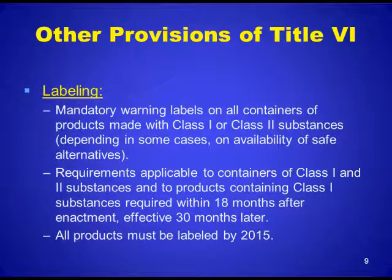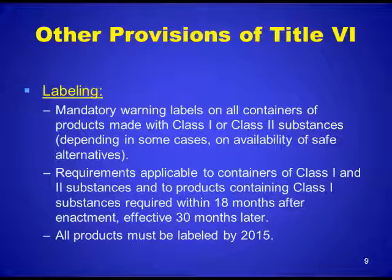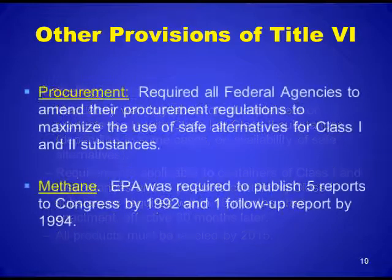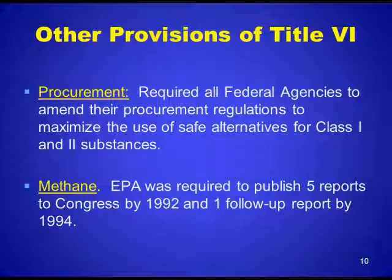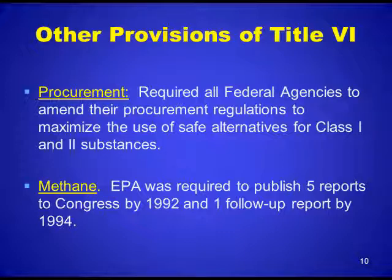Other provisions of Title VI include labeling requirements: mandatory warning labels on all containers of products made with Class I or Class II substances, depending in some cases upon availability of safe alternatives. There are requirements applicable to containers of Class I and Class II substances and to products containing Class I substances, required within 18 months after enactment and effective 30 months later. All products must be labeled by 2015. For procurement, all required federal agencies are to amend their procurement regulations to maximize the use of safe alternatives for Class I and Class II substances. With regard to methane, EPA was required to publish five reports to Congress by 1992 and one follow-up report by 1994.